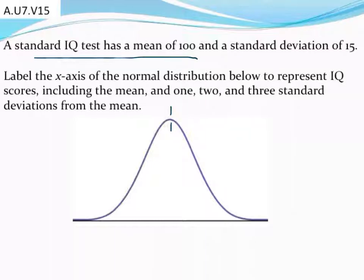Your mean is going to go right in the center of your normal distribution. So let's go ahead and mark right down the center. We're just estimating where these are going to be. We're just making a sketch. Our mean is going to be 100, so we're going to go right in the center.